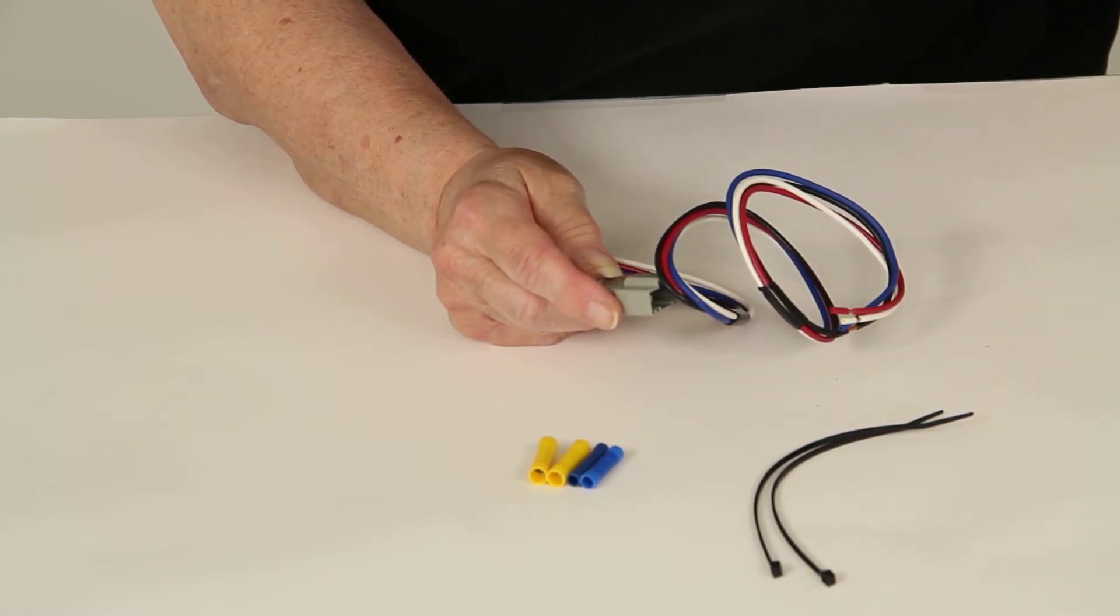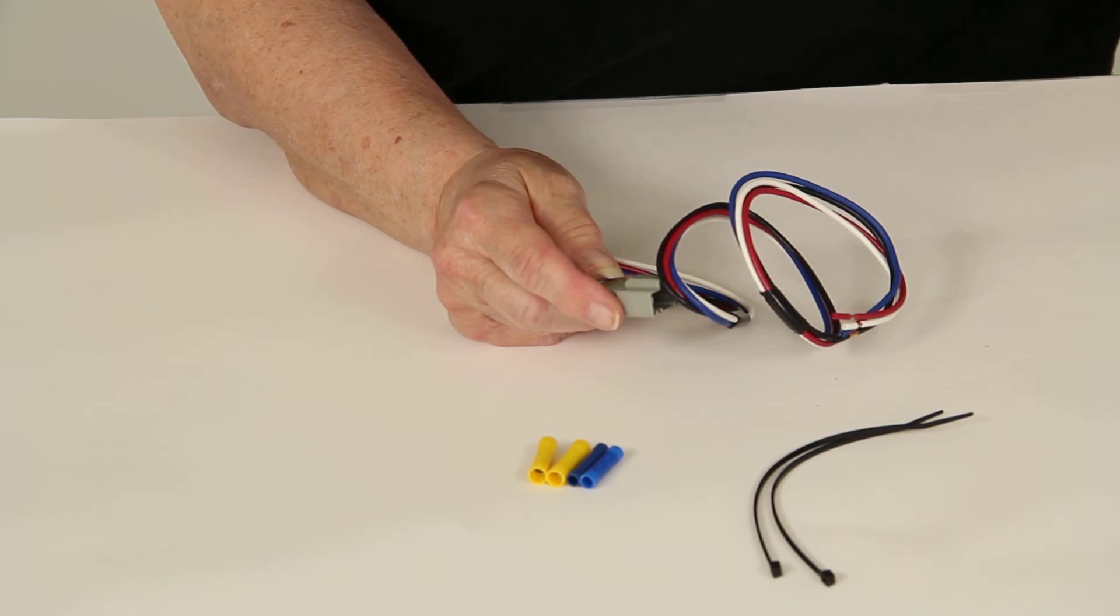And that's it for part number TM75268, the TrailerMate custom wiring adapter for trailer brake controllers.